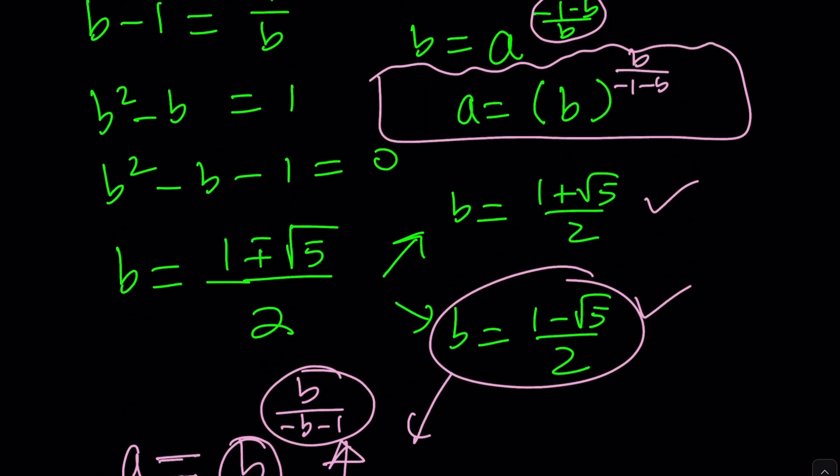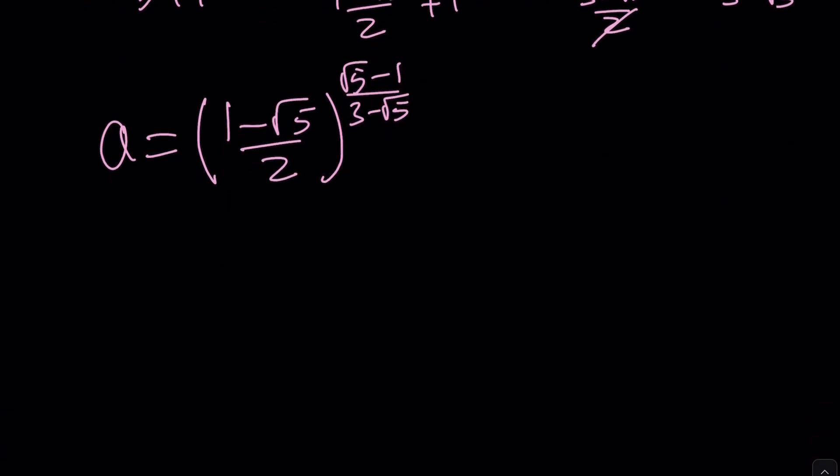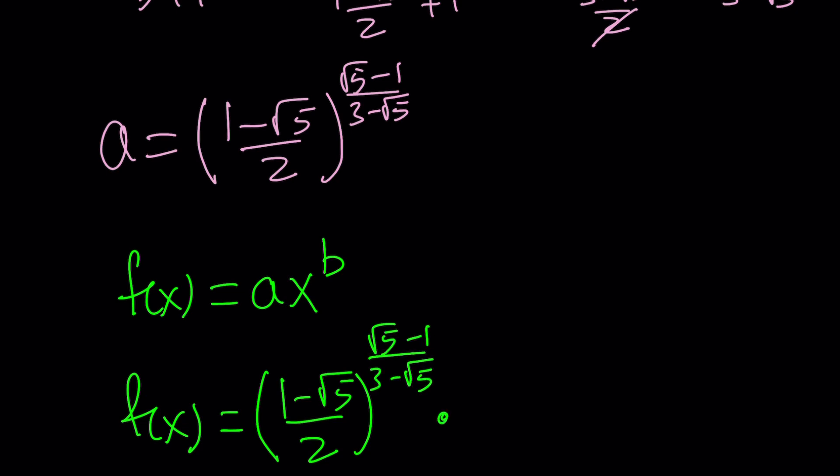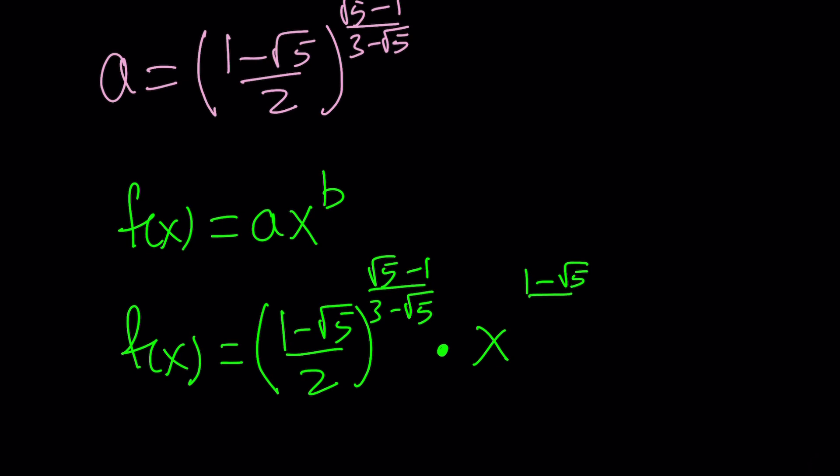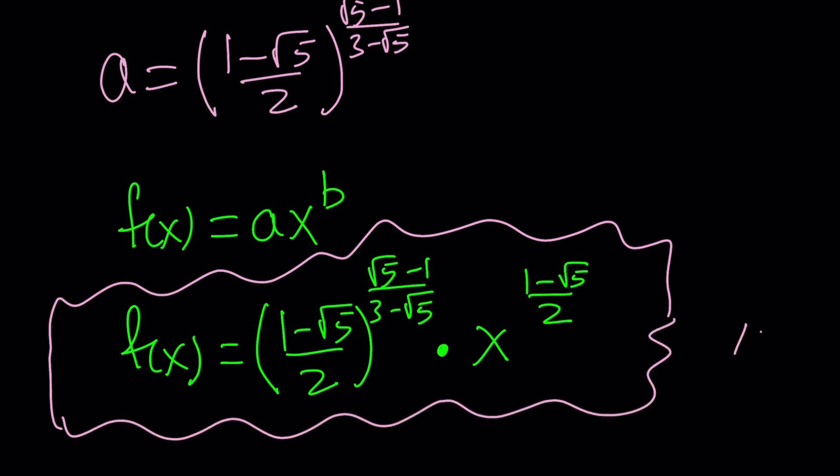Now, we can go ahead and write down one of the solutions. f of x, remember, we assumed it was going to be in the form a times x to the power b. And we know both of the values. a is 1 minus root 5 over 2 to the power root 5 minus 1 over 3 minus root 5, and then times x to the power b, and b is a little simpler, 1 minus root 5 over 2. And guess what? Can you believe this? This is a function whose derivative equals 2 times its inverse. If you don't believe that, go ahead and test it out. Plug it in.